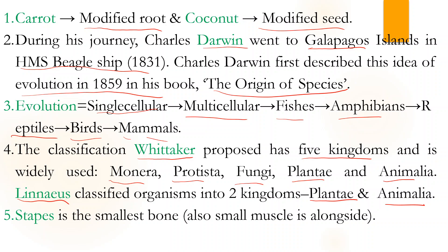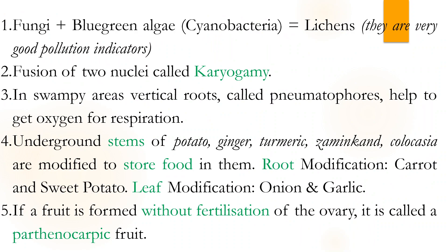In human beings, the smallest bone is the stapes — it is a bone in the ear. The three ear bones are malleus, incus, and stapes. Incidentally, the smallest muscle is also associated with the smallest bone, and its name is stapedius — just add 'dius' to stapes.